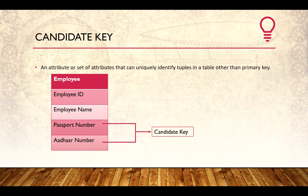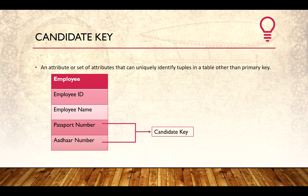Candidate key is an attribute or set of attributes that can uniquely identify tuples in a table, other than the primary key. If something is already made a primary key, it will not qualify as a candidate key. So here, passport number alone or combined with Aadhar number could act as a candidate key. A candidate key is essentially a probable candidate for the primary key. This is a logical key — we generally don't need to specify it while creating a table, but it helps us understand the database better.